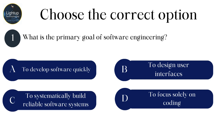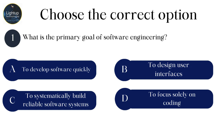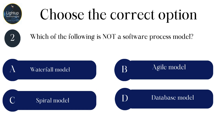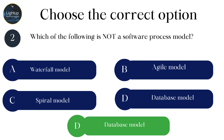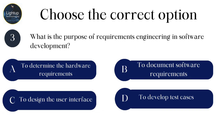What is the primary goal of software engineering? Which of the following is not a software process model? What is the purpose of requirements engineering in software development?